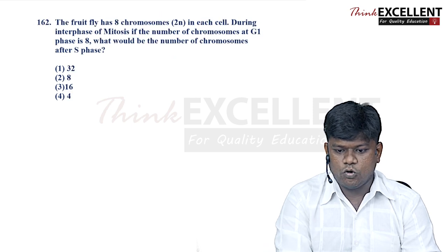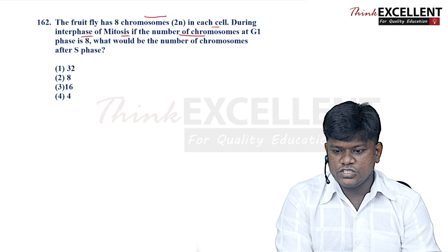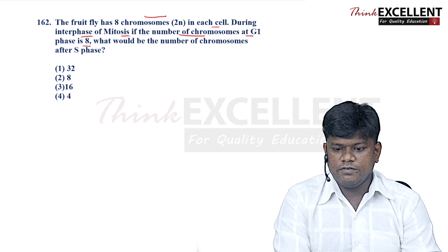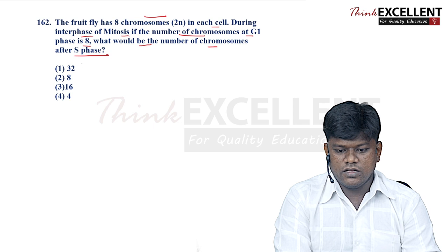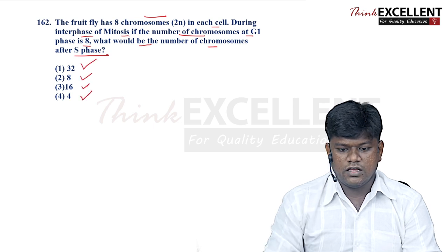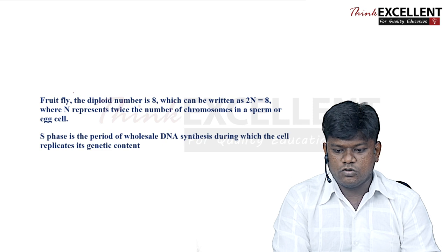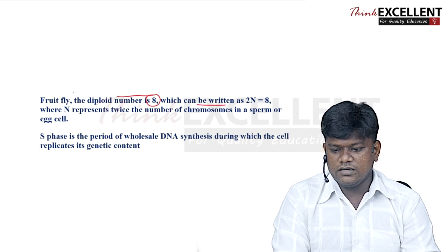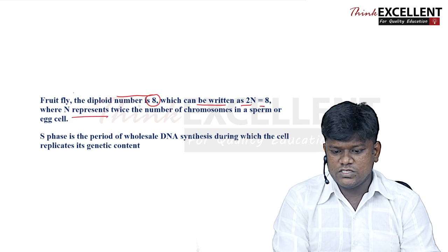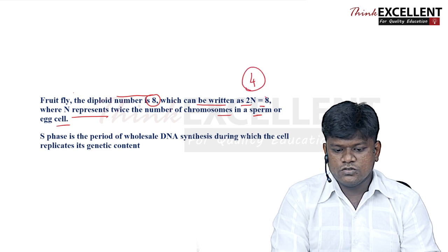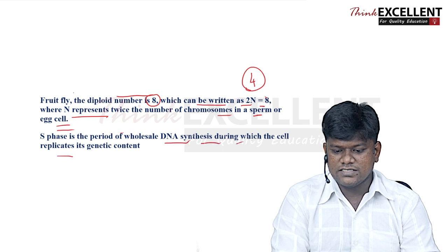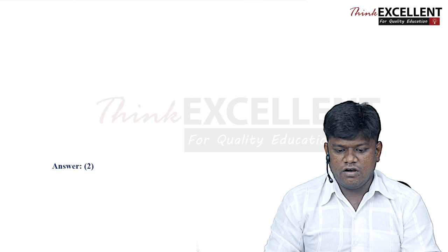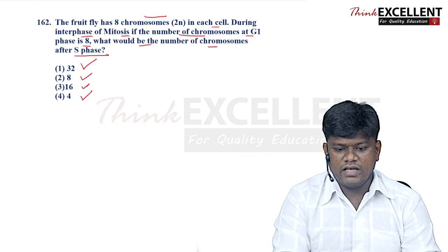Question 162: the fruit fly has 8 chromosomes (2n = 8) in each cell. During interphase of mitosis, if the number of chromosomes at G1 phase is 8, what will be the number after S phase? Since DNA replication occurs but chromosomes aren't yet separated, the chromosome number remains 8. Option 2 is the right answer.